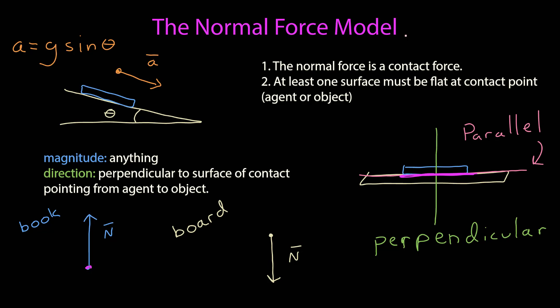Looking at the board, it's the opposite. The agent is the book, the object is the board, and so from the agent to the object points down.